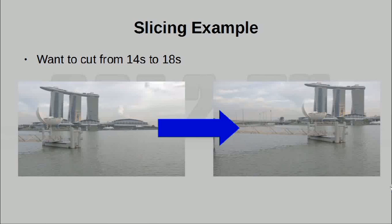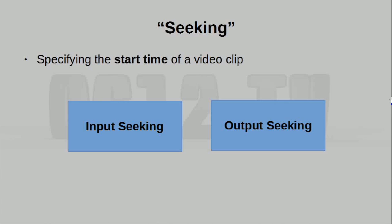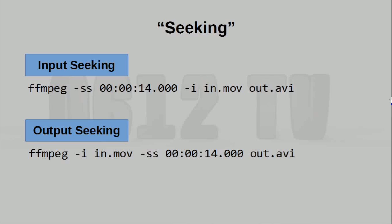Let's now talk about another editing feature, and that is slicing. In the sample video you've been seeing, we've made a huge pan across the city skyline of Singapore. Now let's say I don't want the entire pan — I only want the part where the Marina Bay Sands is visible. I've scrubbed through and realized I only want the footage from the 14-second mark to the 18-second mark. You can of course do this with FFMPEG and there are several different methods. To get to the start time, we use a feature called seeking. There are actually two ways: input seeking and output seeking, with slightly different command calls.